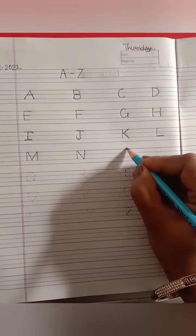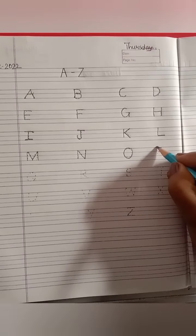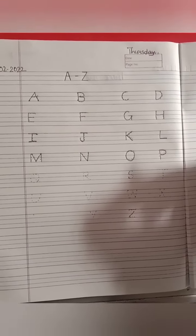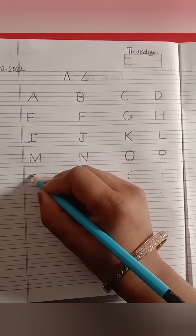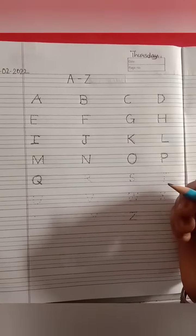Next, letter O. O says o. P, one standing line, curve. P says p. Q. Q says qu.